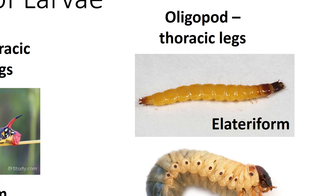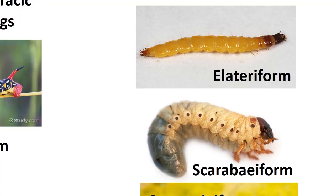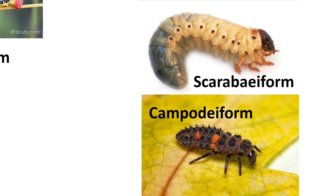Oligopod larvae can be further classified by form. Scarabaeiform is grub-like and relatively inactive and sluggish; it occurs in certain Coleoptera, for example the Scarabaeidae or scarab beetles. Elateriform includes long cylindrical larvae with a hard body and short legs; it occurs in certain Coleoptera such as click beetle larvae. Campodeiform has well-developed thoracic legs, antennae, and cerci visible, with an elongated and somewhat flattened body. Examples are found in many beetle families, including ground beetles, rove beetles, and ladybird beetles.